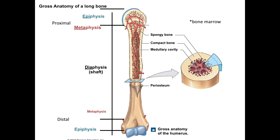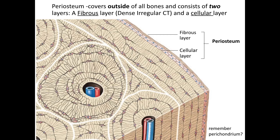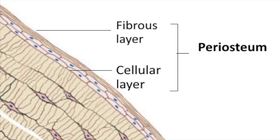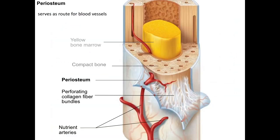The bone is also covered by a fibrous connective tissue layer called the periosteum. Like the perichondrium, the periosteum is made up of two layers: a fibrous layer of dense irregular connective tissue and a cellular layer, which is important in maintaining bone growth and remodeling. That dense irregular connective tissue is also an important part of how tendons and ligaments insert into bone tissue, and it provides a route for nerves and blood vessels before they penetrate into the bone.